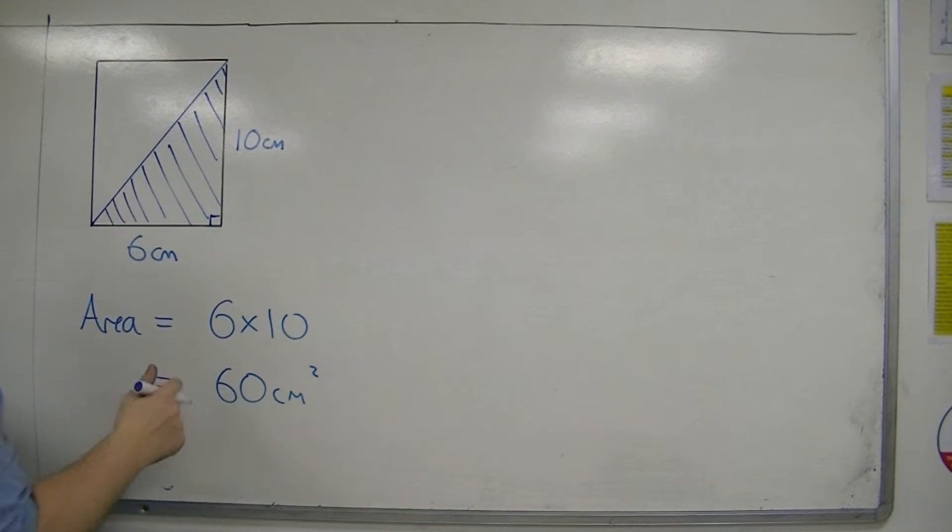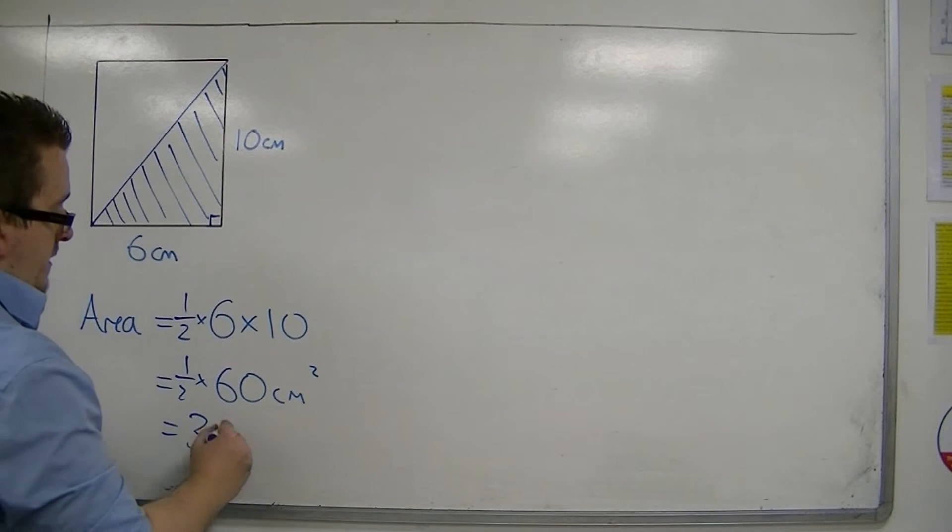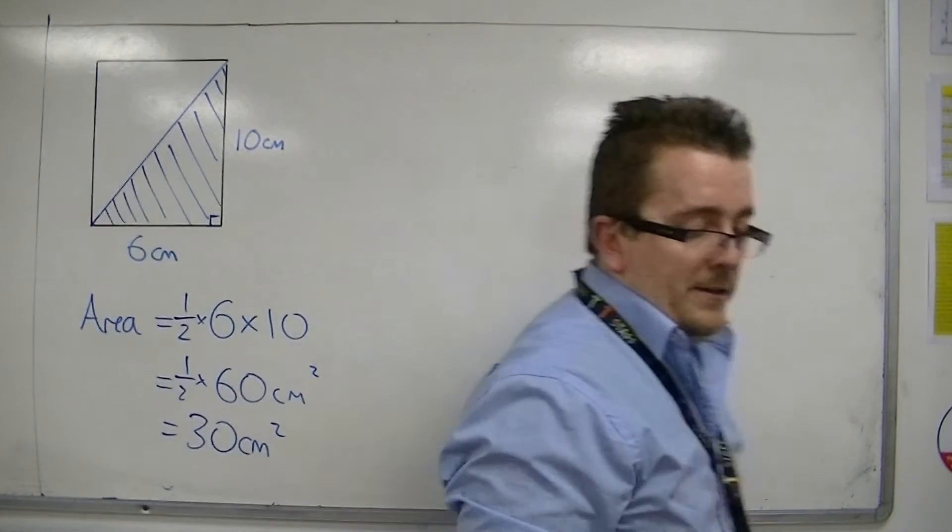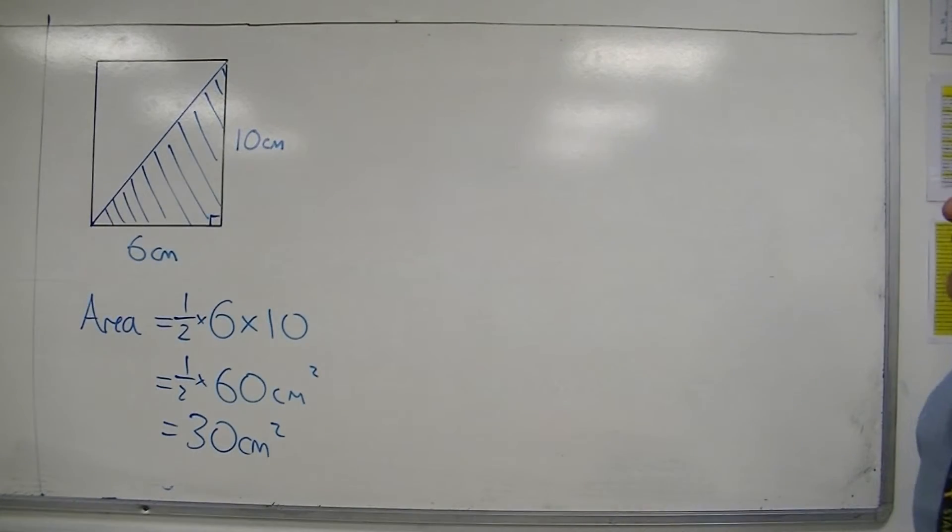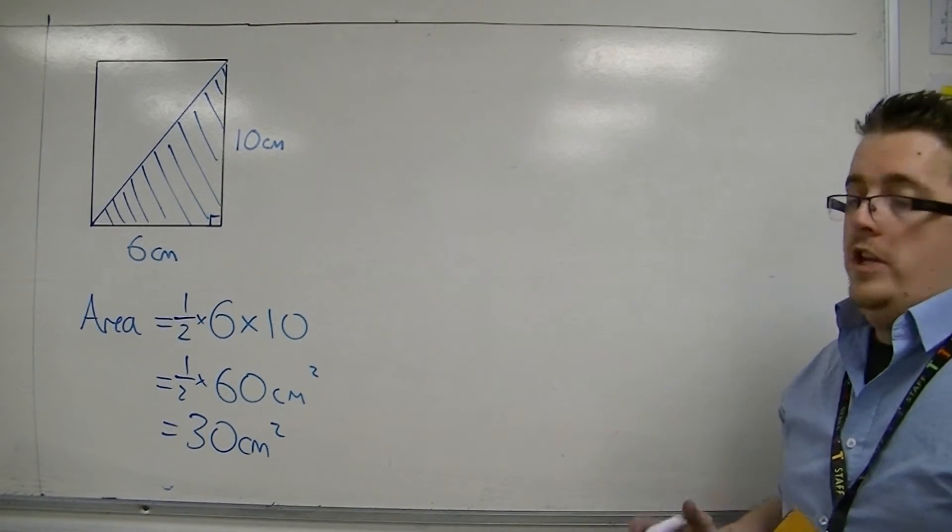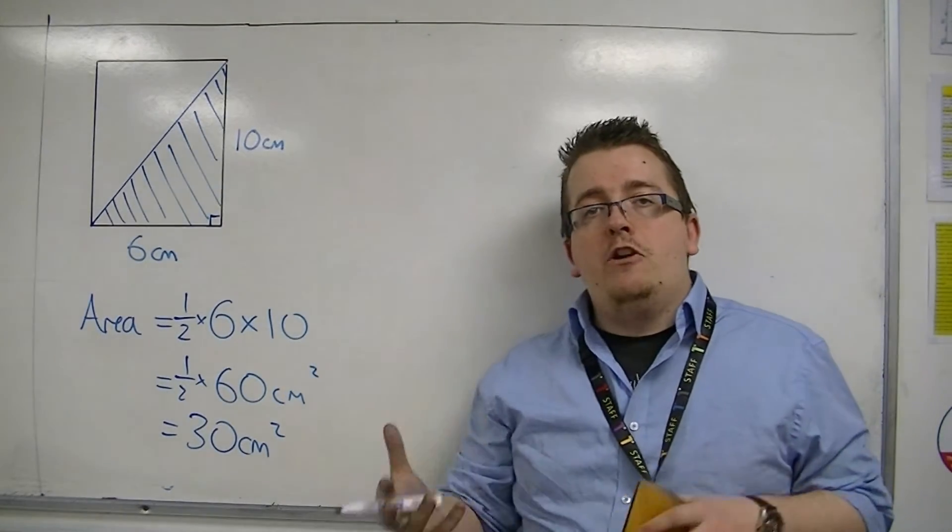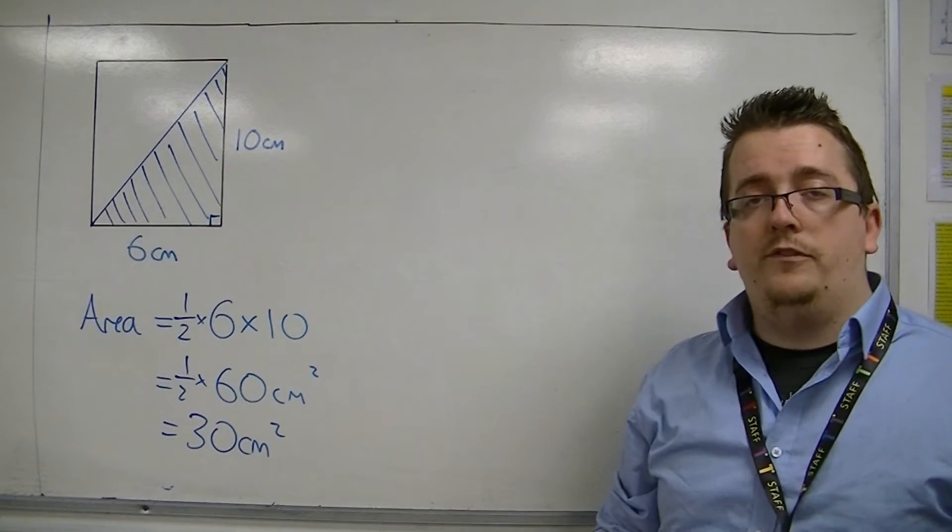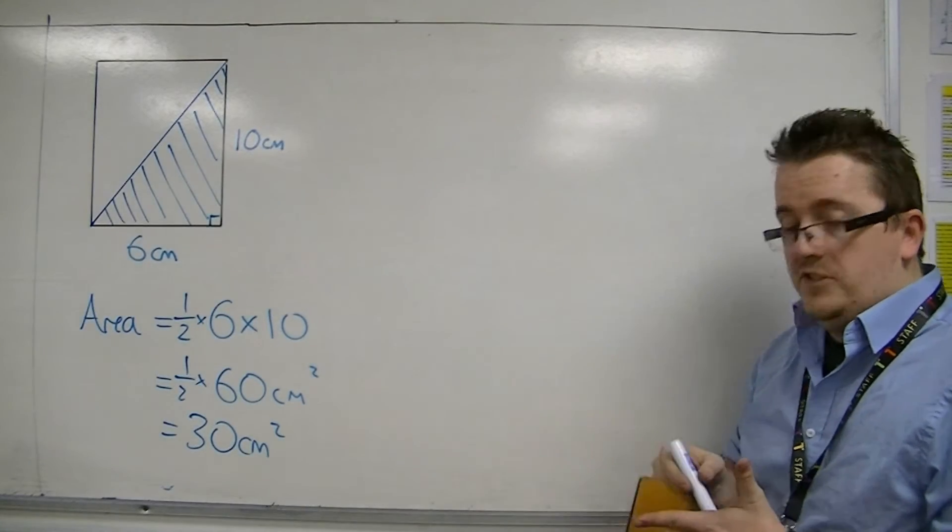So it's actually a half of 6 times 10, so a half of 60, which is 30 centimetres squared. The area of the triangle is just 30 centimetres squared. In general, what you can do to find the area of a triangle is multiply the base by the height and then halve it—or half base times height.